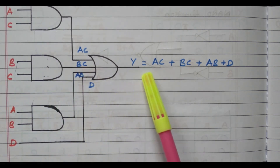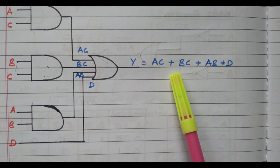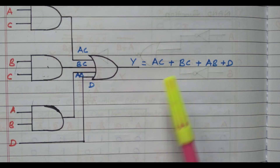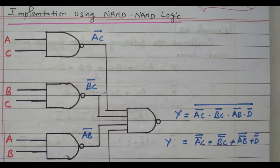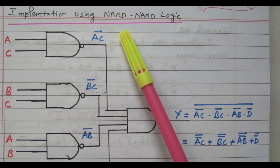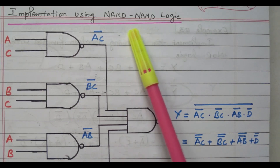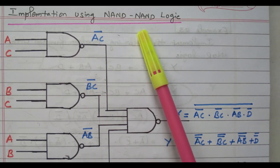Now we will implement this same function using only the NAND gate. Our question is we need to implement with only NAND gate. Now we will see the diagram implementation using only NAND-NAND logic.